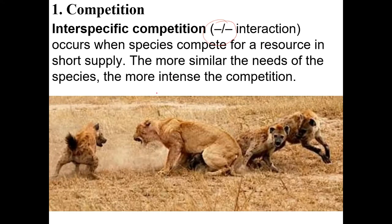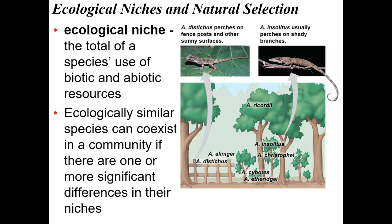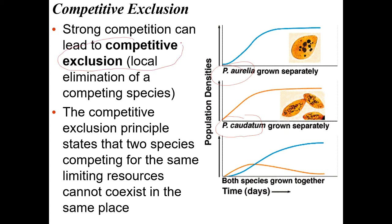The more similar the needs of the species, the more intense the competition. Scientists grew two protists — P. caudatum and P. aurelia — separately, and each increased and balanced off around carrying capacity. If you grow them both together, one starts out doing a little bit better, but then the other one out-competes it and the first one dies out. That's called competitive exclusion. The competitive exclusion principle states that two species competing for the same limiting resource can't coexist in the same place — it might be local extinction, not total extinction.